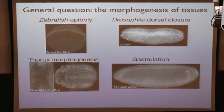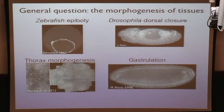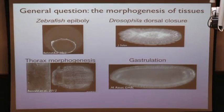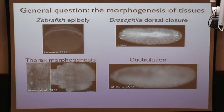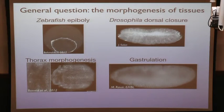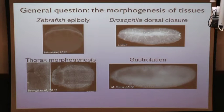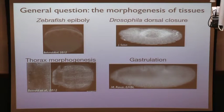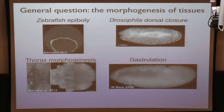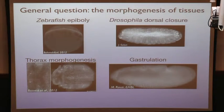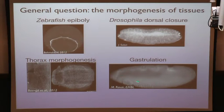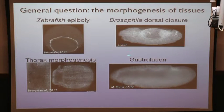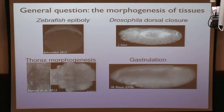This is thorax morphogenesis, also in Drosophila, which involves anisotropic motion of convergence and extension in the tissue. And this is gastrulation — one of the first events in the development of Drosophila, which involves a change of the topology of the embryo. For that, it requires the tissue to deform in three dimensions and to fold. Here we see a cross section along the anterior-posterior axis of the embryo, showing how this epithelium folds to move some cells from the surface inside the embryo.